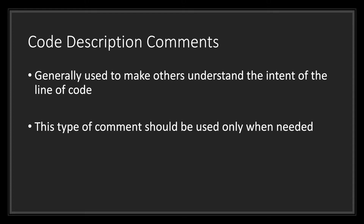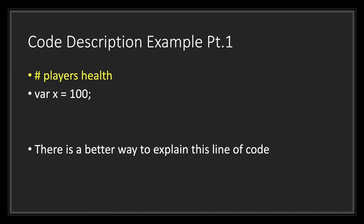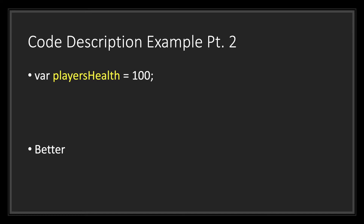The last type of comment is the code description comment, generally used to make others understand the intent of a line of code. This is vastly different from explaining the methodology or reason you chose the code. This type of comment should be used only when needed. A common example beginners use is naming variables x and y and then using comments to explain their intent. For instance, a programmer might let you know that variable x represents the player's health. However, there's a better way — instead of using a comment, you can name your variable something meaningful to explain the intent of the code.